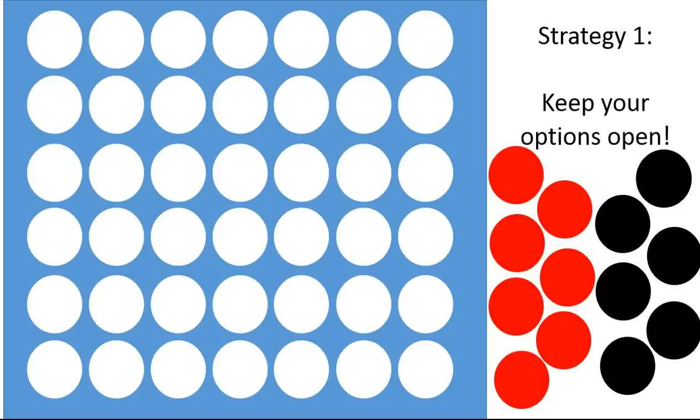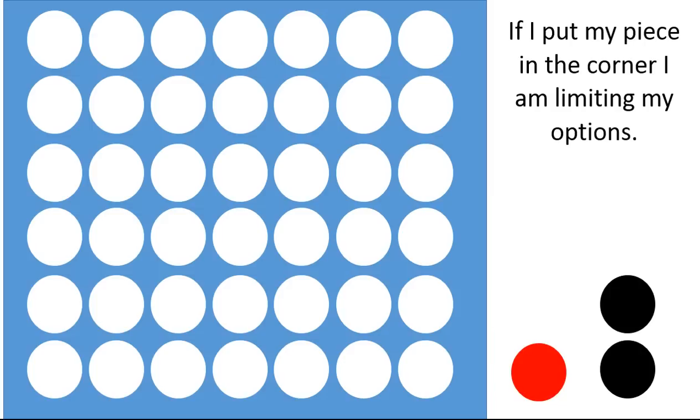Strategy number one, keep your options open. For this strategy, what I'd like to look at is to think about where you put your pieces, especially near the beginning of the game. If I put my piece in the corner like that, I limit my possibilities. I have three options for this one being part of a row of four.